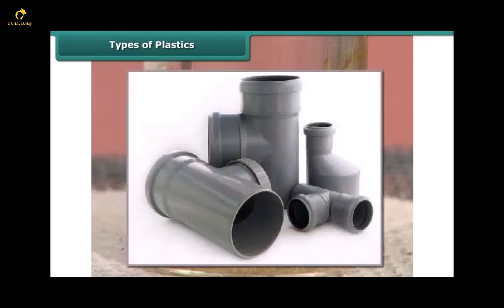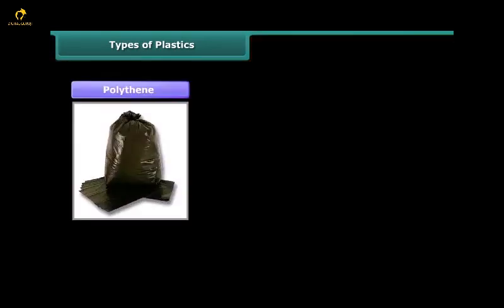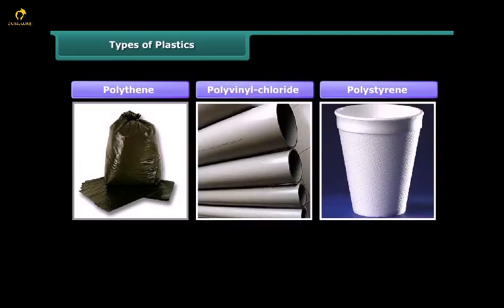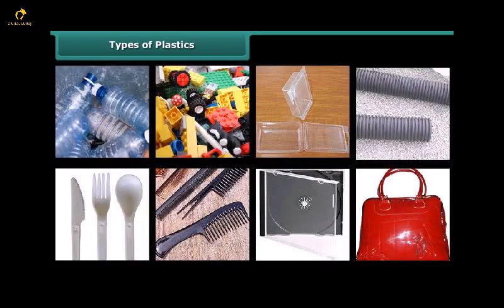Therefore, they can be recycled. Some examples of thermoplastics are polythene, polyvinyl chloride and polystyrene. These are used in manufacturing of water pipes, drain pipes, packaging, bags and bottles, toys, combs, disposable cutlery, CD and DVD cases.